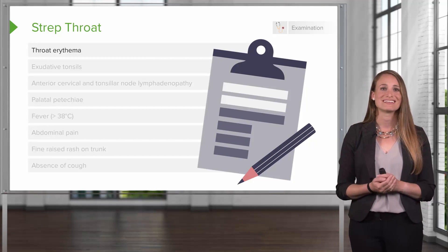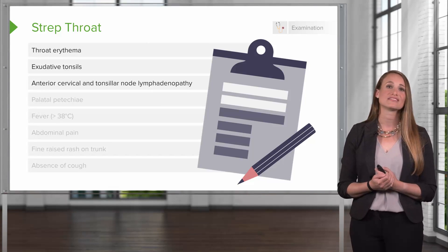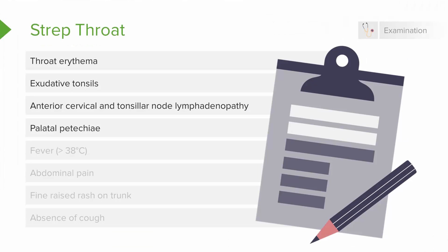Remember, you're looking for throat redness, pus or exudate on the tonsils, anterior cervical or tonsillar lymph node adenopathy, and palatal petechiae — those small pinpoint hemorrhages. The patient will have a fever unless on antipyretics. Abdominal pain is also a symptom: strep makes the mesenteric lymph nodes in the abdomen swell, and in kids under five presenting with abdominal pain for no other cause, a strep test is warranted. A fine raised rash on the trunk — the scarlatina rash — may also be present.